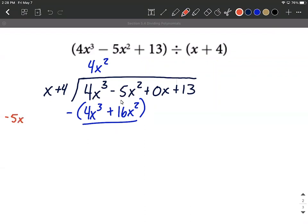We have -5x² minus 16x². So that's going to produce -21x². It's easy to make sign mistakes there. That's why I like doing the side work over here just to make sure we're all on track.